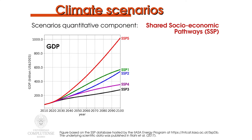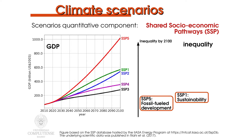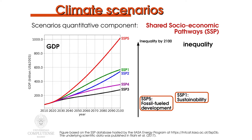The gross domestic product also translates the narrative into quantitative measures, with SSP 5 projecting the highest development and global average income levels, and SSP 3 the lowest due to its strong fragmentation that leads to slow growth rates. As for inequality, in SSP 5 closely followed by SSP 1, inequality is highly reduced along the century, while for SSP 4 it even increases at the end of it.